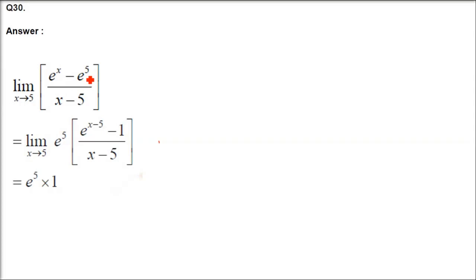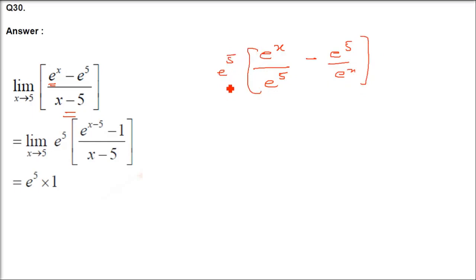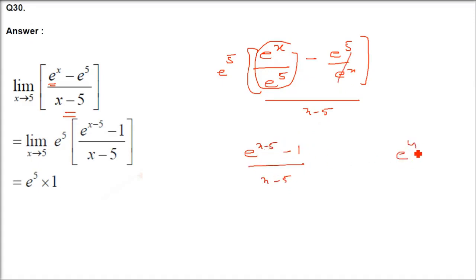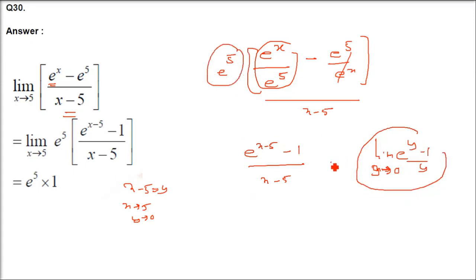Question 30: limit x→5 of (eˣ - e⁵)/(x-5). Factor out e⁵: e⁵·(e^(x-5) - 1). So the expression is e⁵·(e^(x-5)-1)/(x-5). Let y = x-5; as x→5, y→0. Then (eʸ-1)/y → 1. So the answer is e⁵.